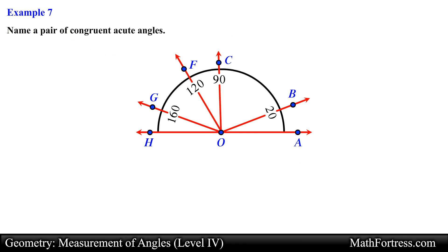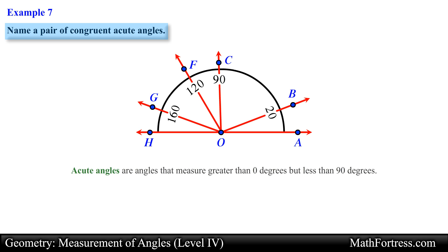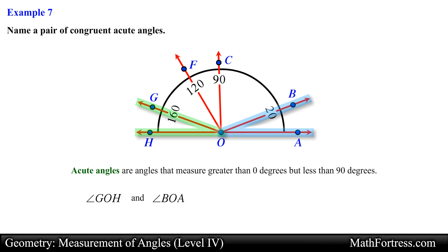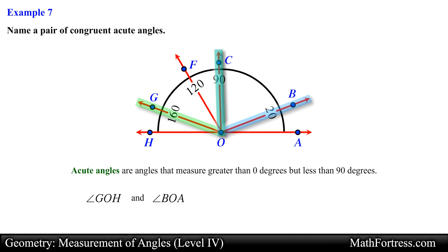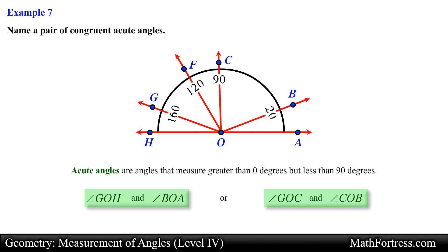Name a pair of congruent acute angles. Recall that acute angles measure greater than 0 degrees but less than 90 degrees. Looking at the diagram, angle GOH and angle BOA are congruent acute angles since both angles measure 20 degrees. Angles GOC and COB are also congruent acute angles since they measure 70 degrees, so either of these two angle pairs is an acceptable answer.